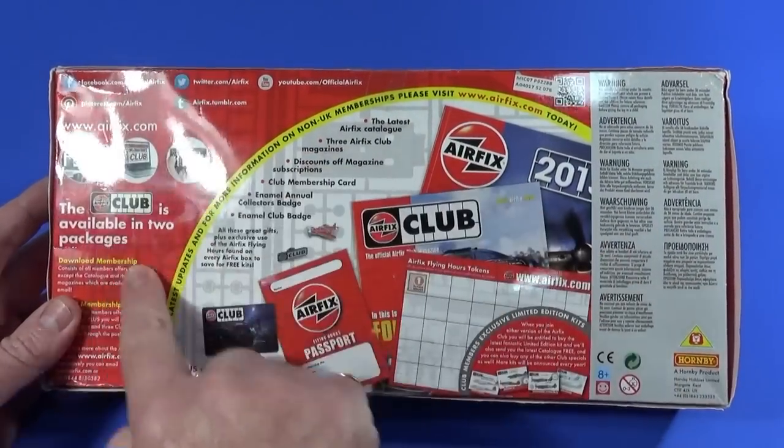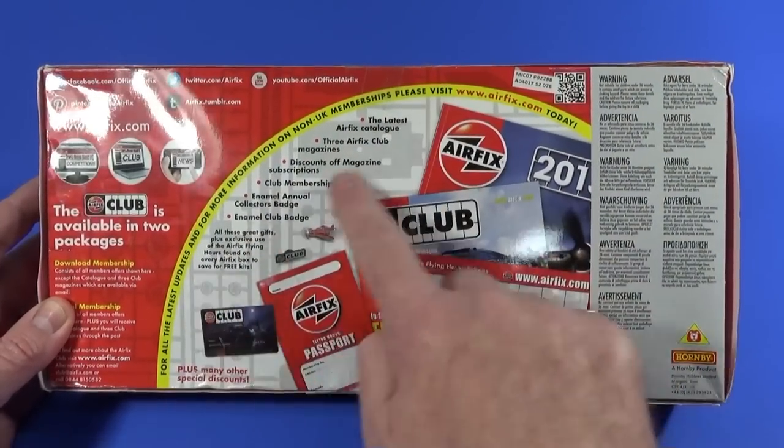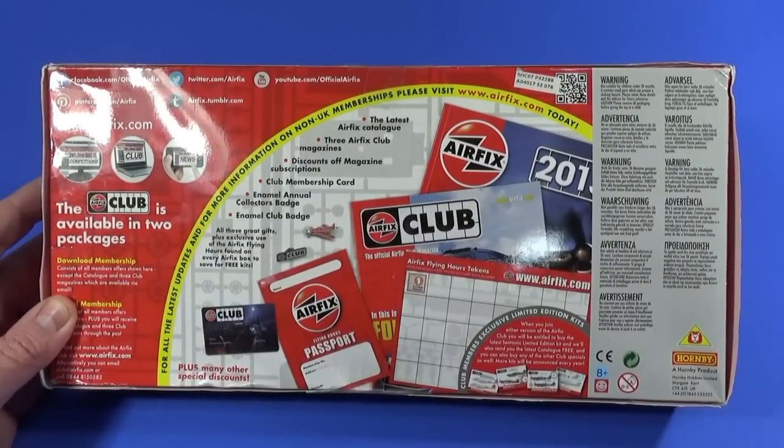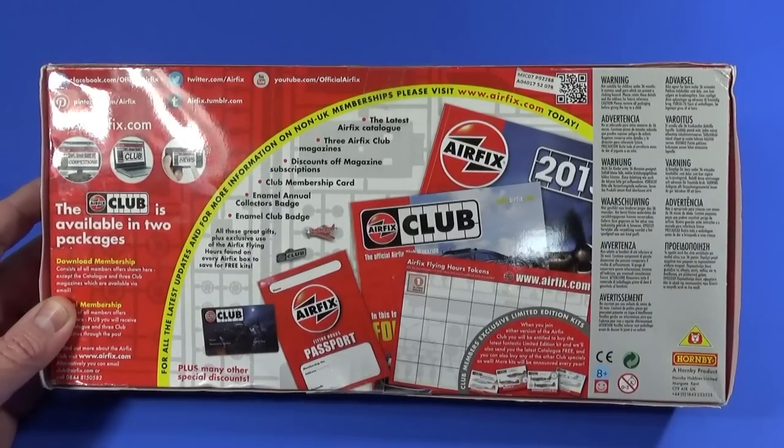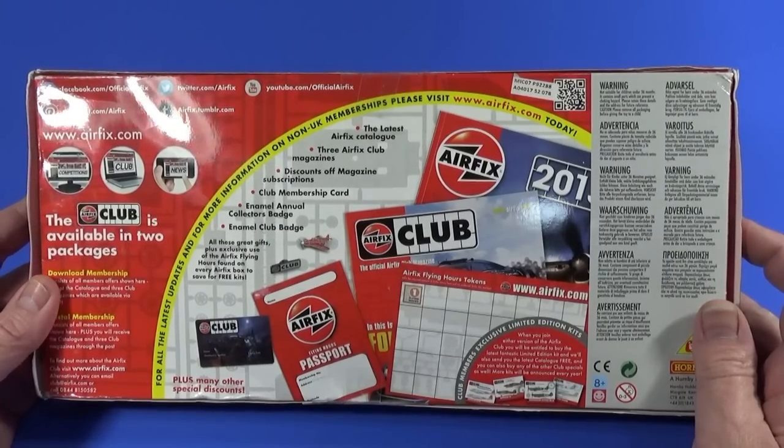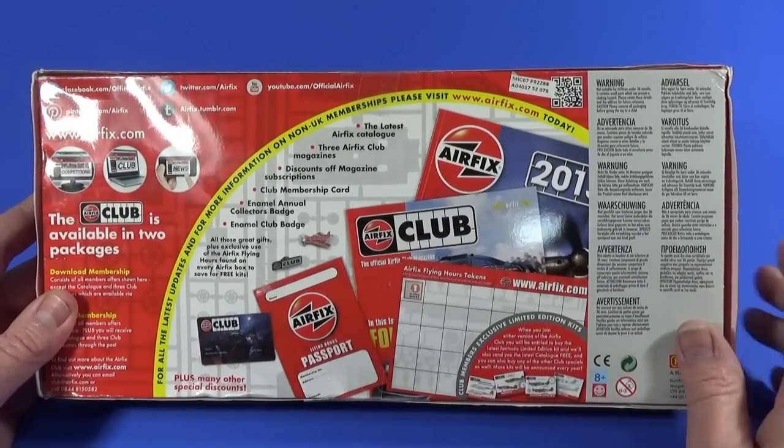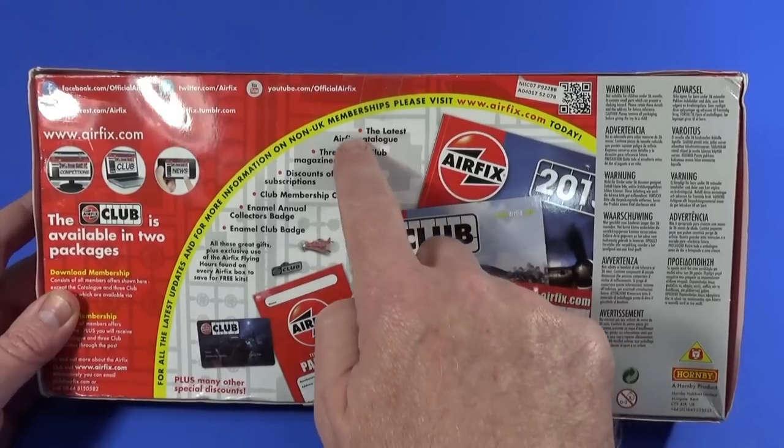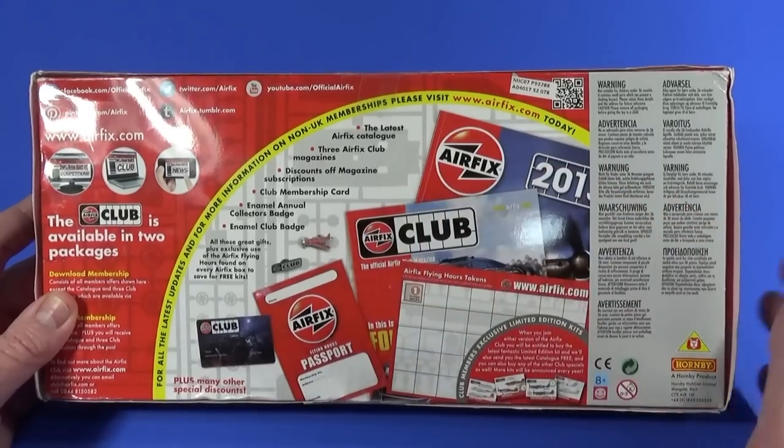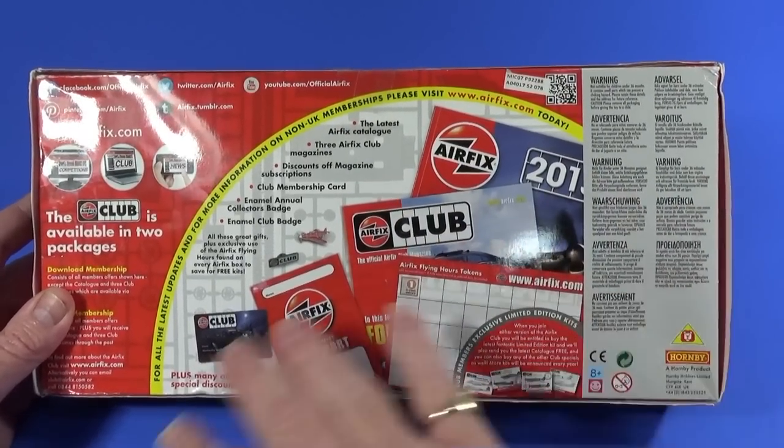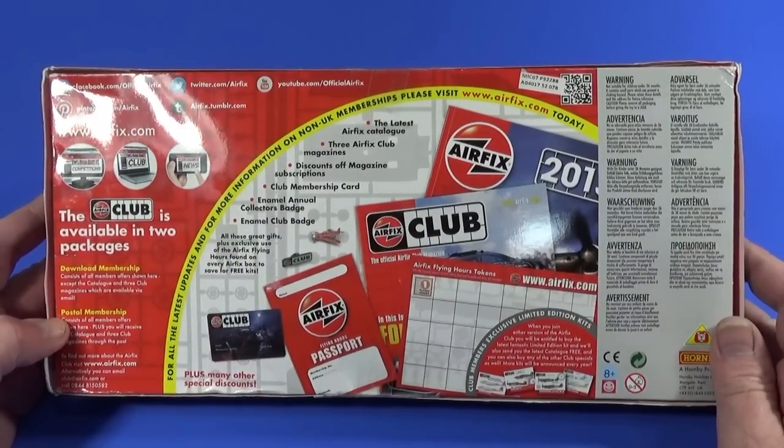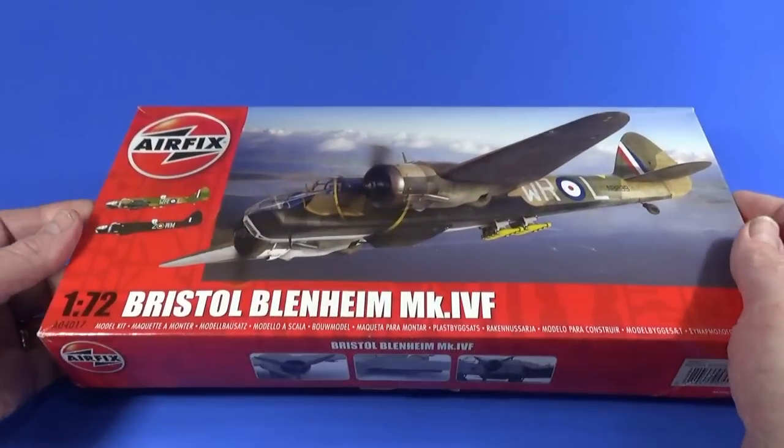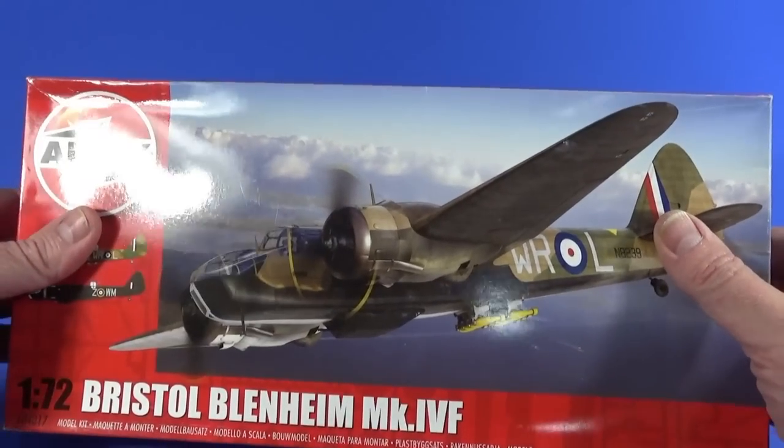On the back is a bit more detail about the club. It's better to just go online. Essentially it's the same things. You don't get an enamel badge anymore, you get a key ring with a remove before flight tag sort of looking thing. I don't believe you get a free catalogue. Club magazines, you get discounts off buying kits and so on. Check it out online, or check out my video that's also online. That's the outside of the box. Let's have a look at what we get inside it.